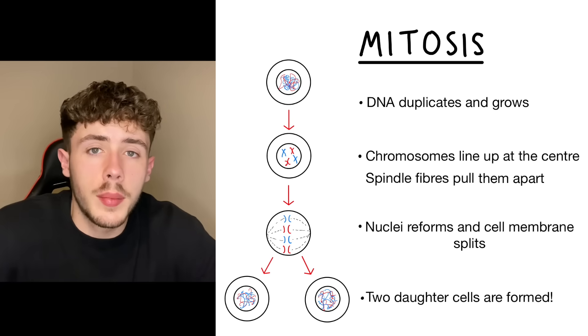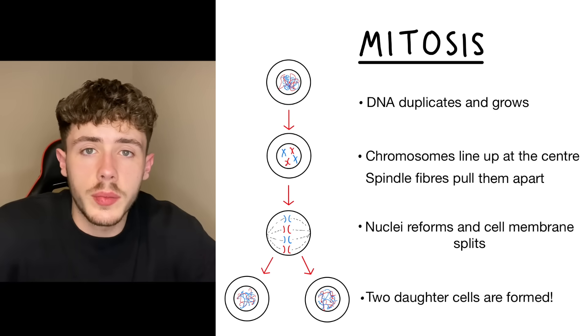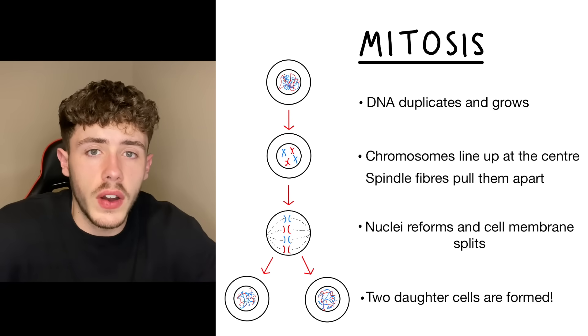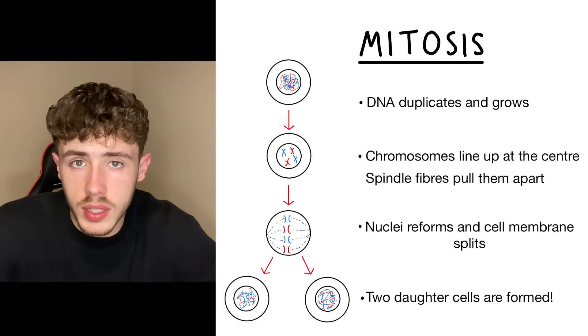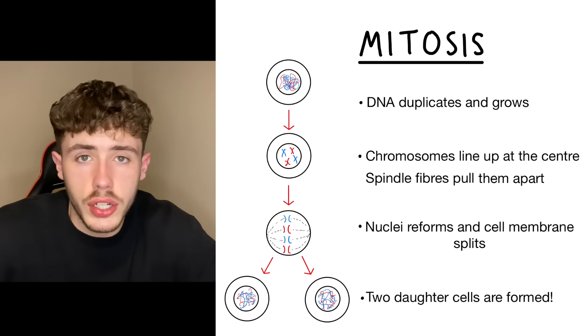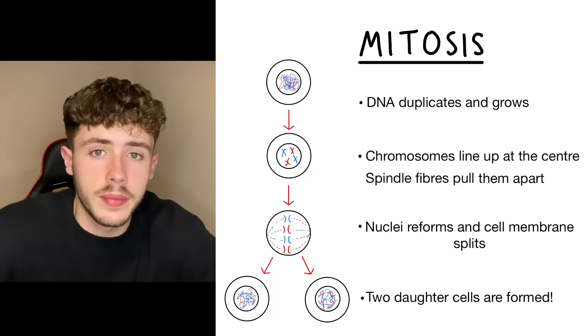Next we move on to cell division, or specifically mitosis. Mitosis describes the process of one cell dividing into two identical daughter cells, as shown in this diagram. Mitosis is used everywhere in our world, and one example of this is in the roots and shoots of a plant — that is where the growth happens.